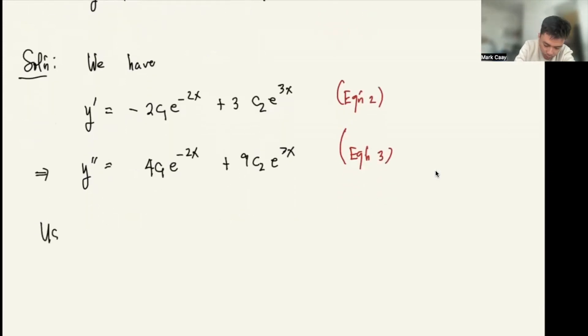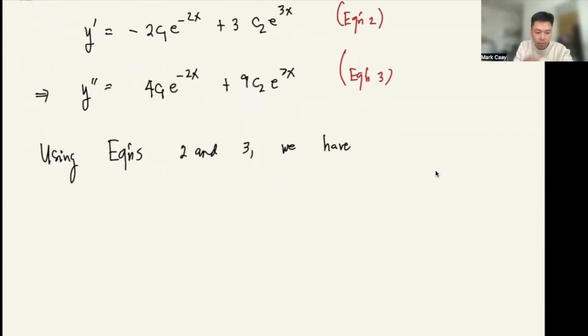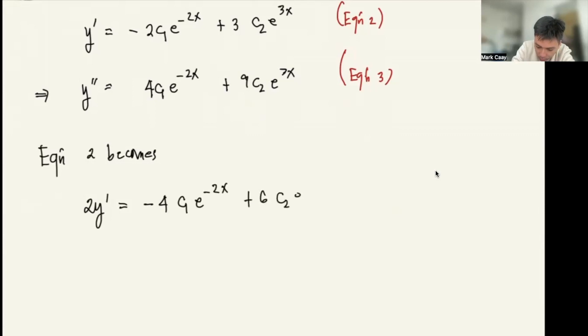So using equations 2 and 3, let me simplify first. Equation 2 becomes 2y prime equals negative 4c1 e to the negative 2x plus 6c2 e to the 3x. I label this as equation 4.